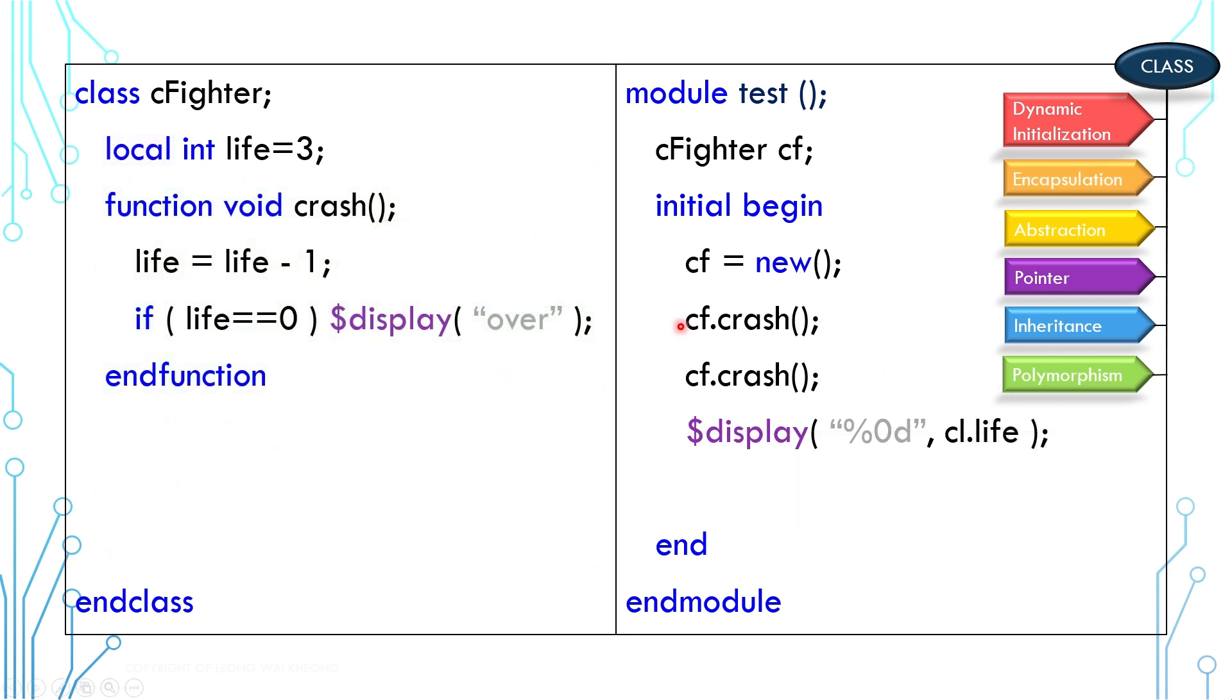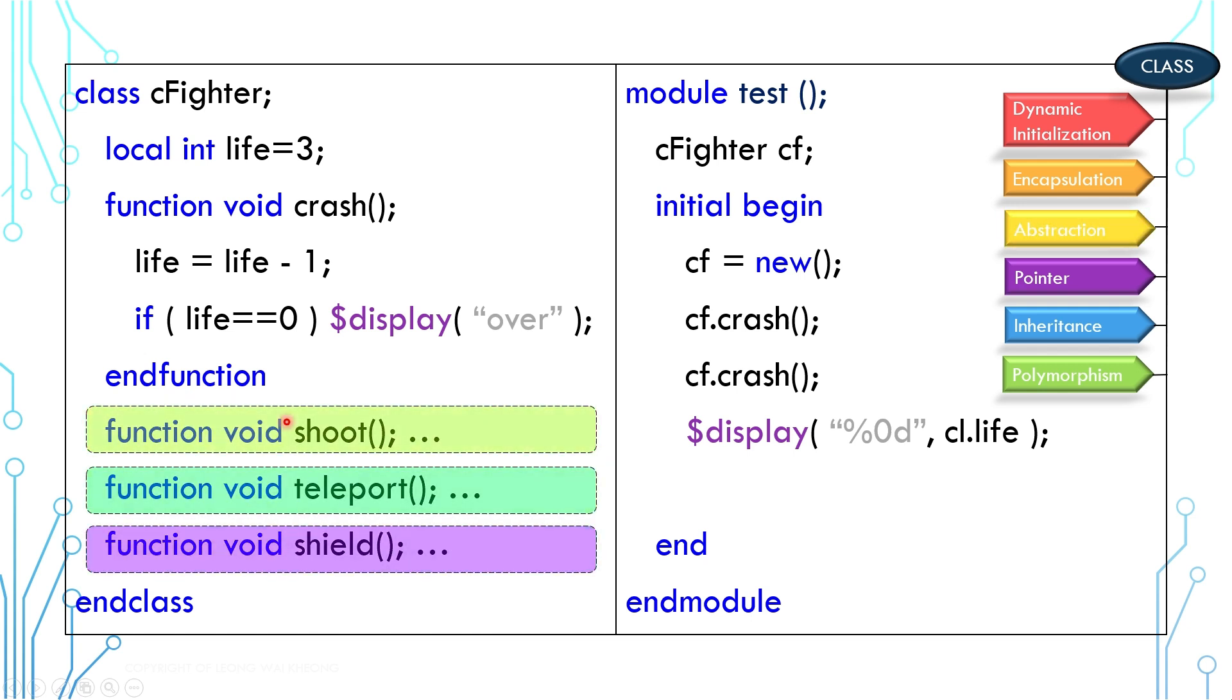Since we are talking about encapsulation, let's talk about another concept, abstraction. Let's say we have three extra functions: shoot, teleport, and shield. Based on the type of fighter, it can choose one of these capabilities and only one.